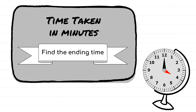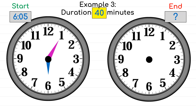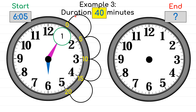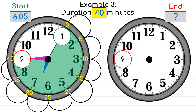Now let's find the ending time in minutes. We are given the starting time of 6:05 and a duration of 40 minutes. Look at the minute hand — it's pointing at 1. Circle number 1 and skip count from 0 until we reach 40: 0, 5, 10, 15, 20, 25, 30, 35, 40. We have reached our destination — so 40 minutes have passed and the time is now showing 6:45.